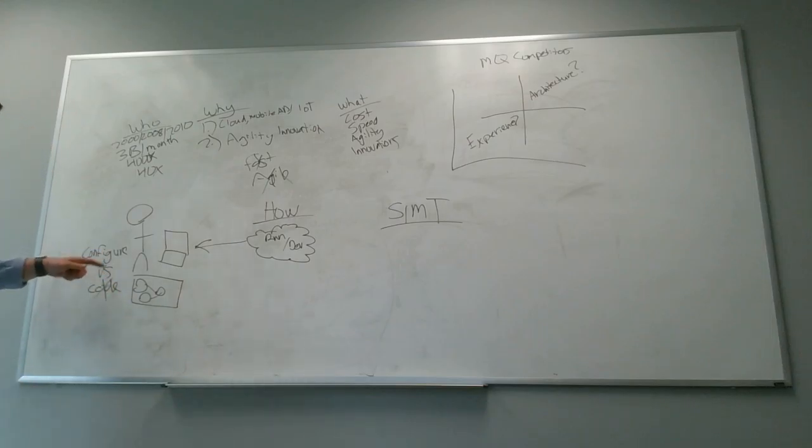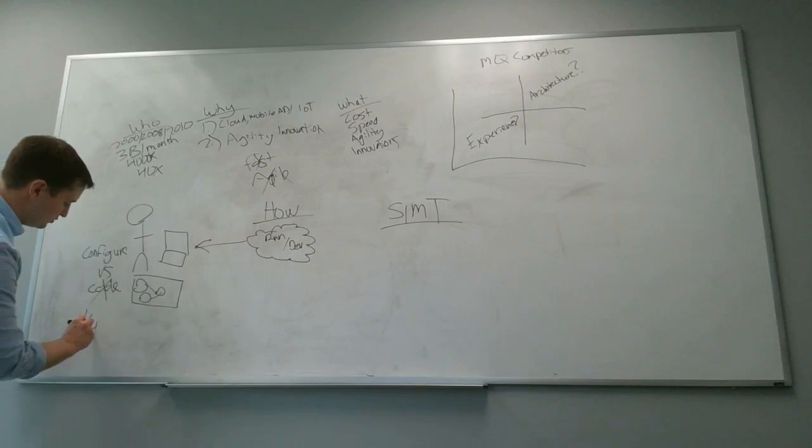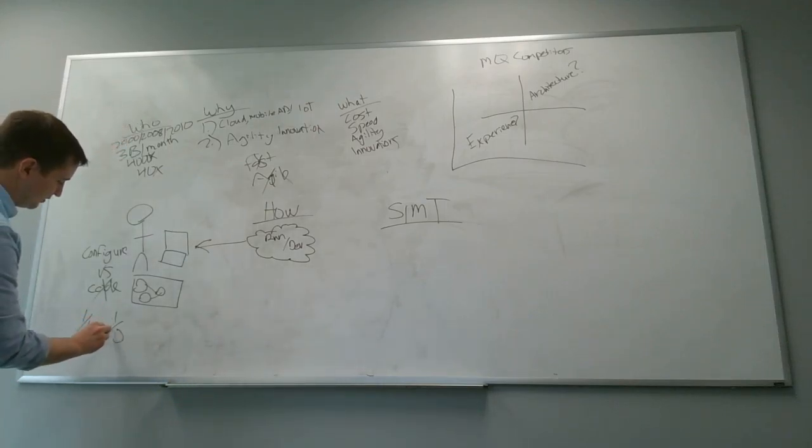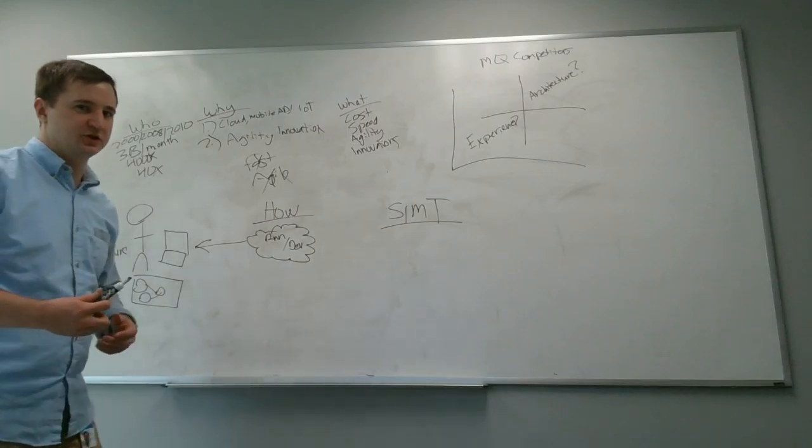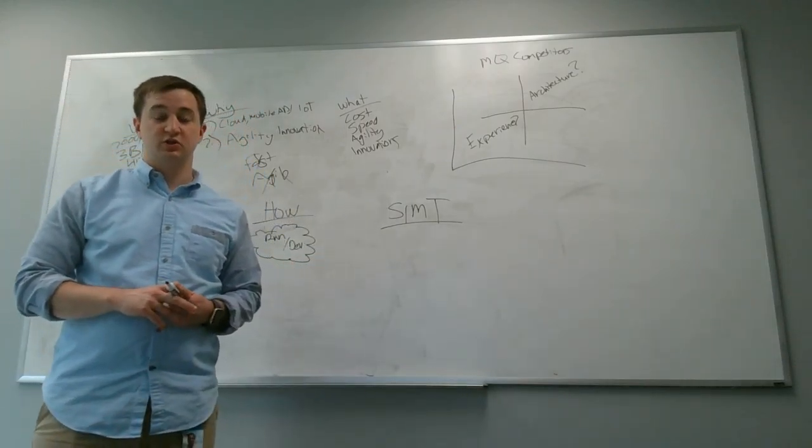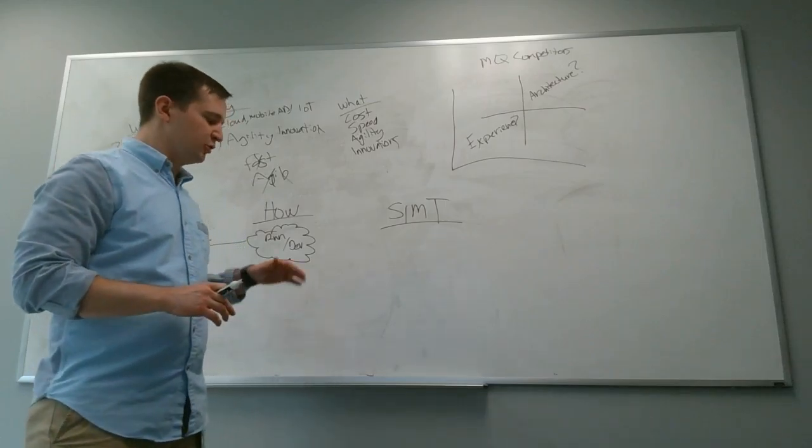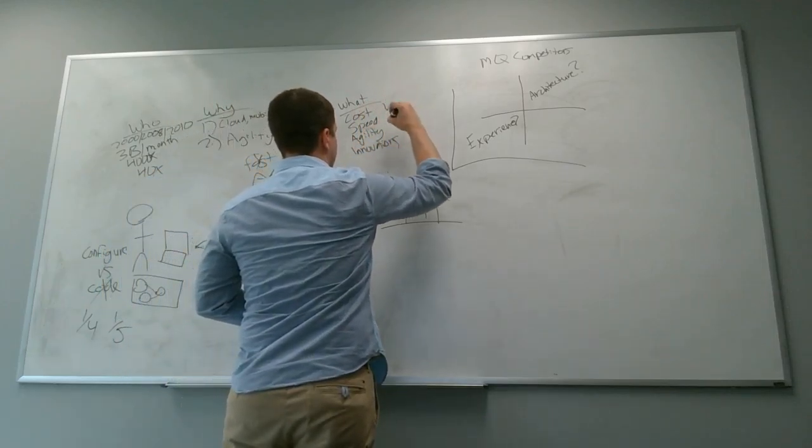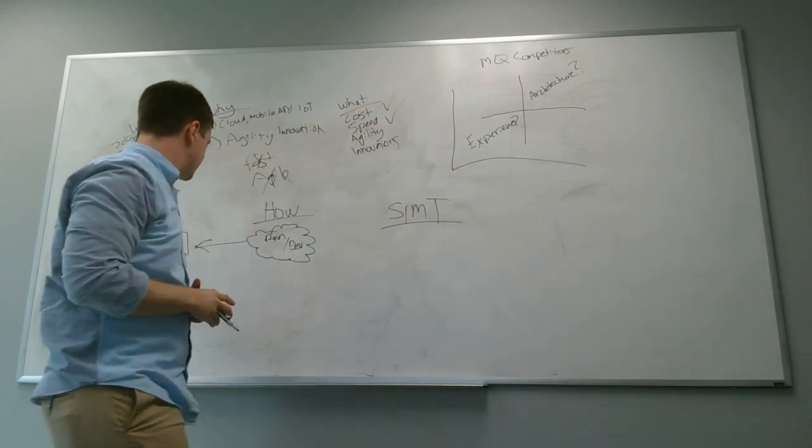And that focus on configure is one of the things that allows our users to develop integrations in one quarter to one-fifth of the time as compared to traditional integration methods. And because most of that cost is associated with the build phase, reducing time also reduces cost. So that takes care of cost and speed here on our checklist.